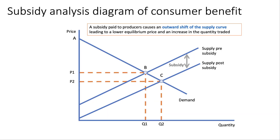So let's take a look at the analysis diagram. Here's a market where we have subsidized the producer. The result is a downward shift in the supply curve, and the scale of the subsidy is shown by the vertical distance between those two supply curves. Originally the price was P1 and output Q1 in equilibrium. After the subsidy the price goes down to P2, the quantity expands to Q2, and the new equilibrium is C.